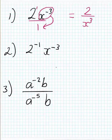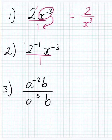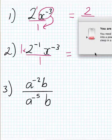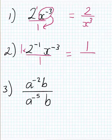This next one looks similar, but the power over here is a negative 1, which means now both the 2 and x³ have to go on the bottom. If everything has to go on the bottom, remember there's an invisible 1 on top. So we're left with 1 over 2 to the power of 1 times x to the power of 3.